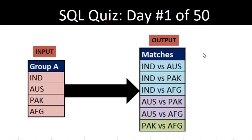Here we have one input table that has a single column called 'Group A'. It has a total of four rows: India, Australia, Pakistan, and Afghanistan. The requirement is we want to do the group-wise matches for each team.